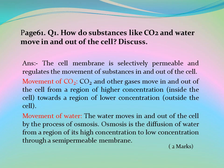Page 61, Question 1: How do substances like carbon dioxide and water move in and out of the cell? The cell membrane is selectively permeable and regulates the movement of substances in and out of the cell. Carbon dioxide and other gases move from a region of higher concentration inside the cell to a region of lower concentration outside. Water moves in and out of the cell by the process of osmosis — the diffusion of water from a region of high concentration to low concentration through a semi-permeable membrane.